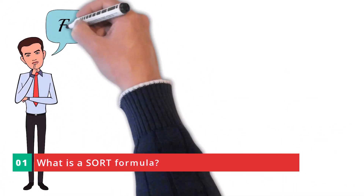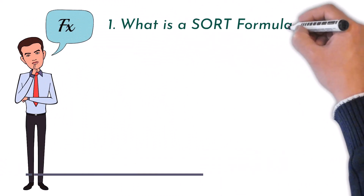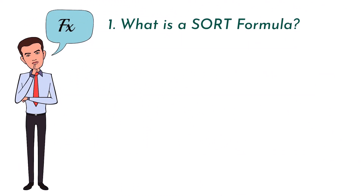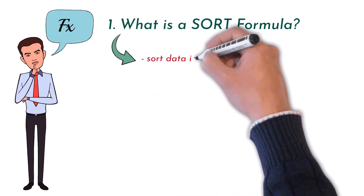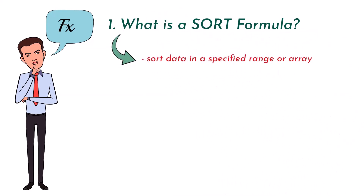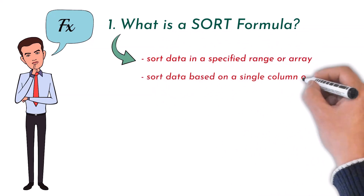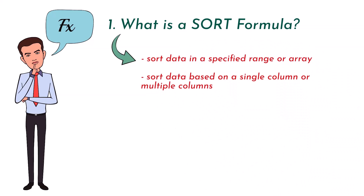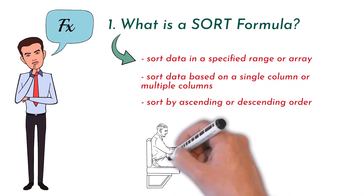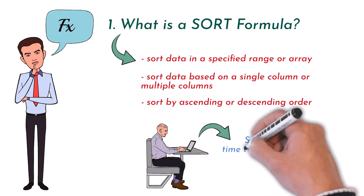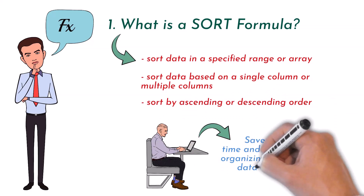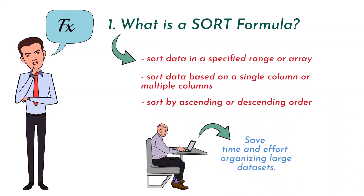So first, what is a sort formula and how does it differ from sort function or tool? The sort formula in Excel is a function that allows you to sort data in a specified range or array. It can be used to sort data based on a single column or multiple columns, as well as by ascending or descending order. Sorting is an essential function for anyone working with data in Excel, and it can save a lot of time and effort when you need to organize large sets of data.